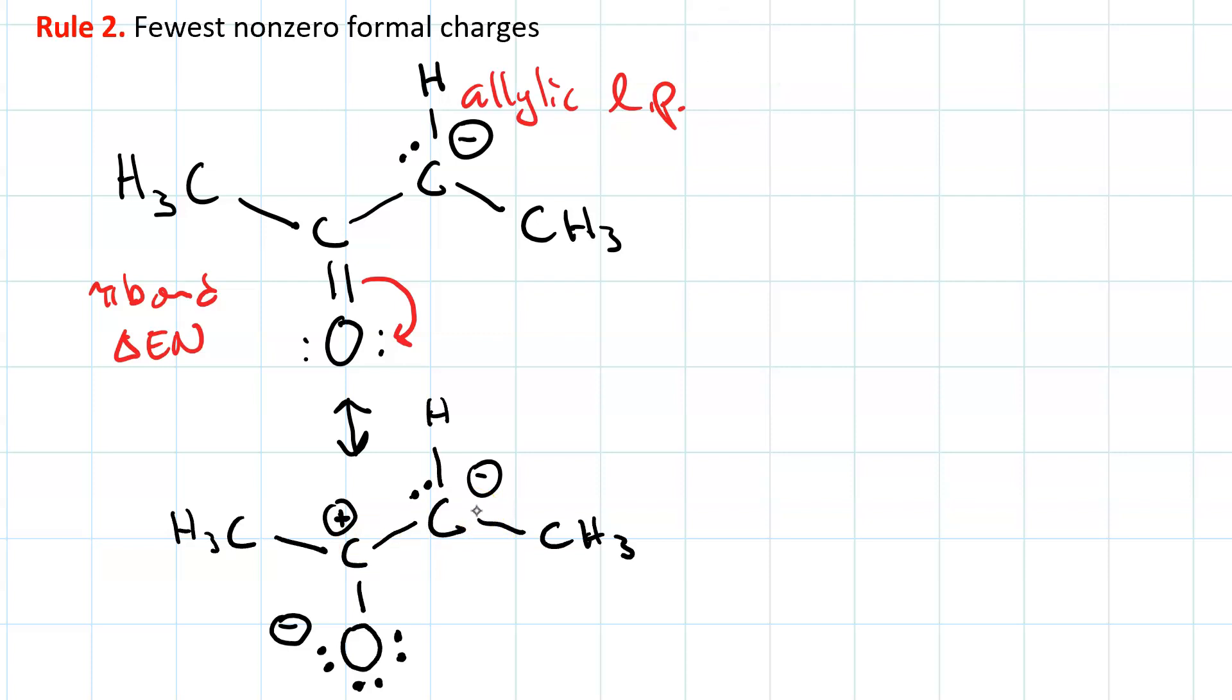But, it's a resonance structure nonetheless. Then we go ahead and do the lone pair adjacent to the carbocation. And now we have our third resonance structure, where again, we have one non-zero formal charge. So, the second resonance structure is definitely not as good as either the first or the third.